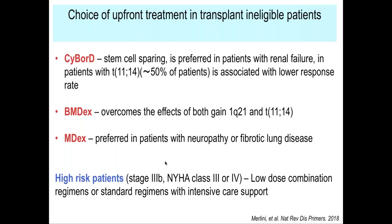CyborD came to revolutionize the treatment for amyloid. This drug was initially reported in 2012 from the Mayo Clinic and later confirmed by the UK group, showing deeper responses not seen with melphalan and dexamethasone before. However, we have realized that half of patients with translocation 11-14 actually don't get better responses with CyborD, and those patients might benefit by adding something else — either transplant or bortezomib in combination with melphalan and dexamethasone. Melphalan and dexamethasone is still preferred for patients that might be frail or patients that might have some neuropathy where you're trying to spare bortezomib.